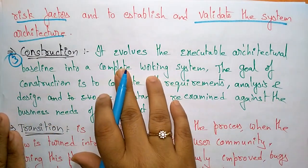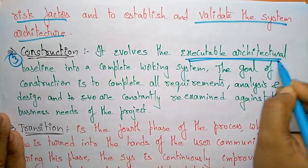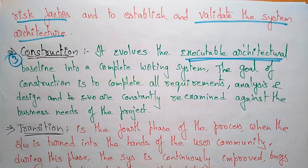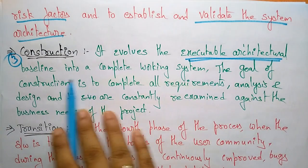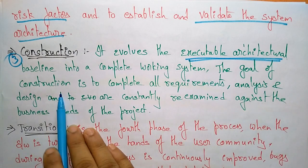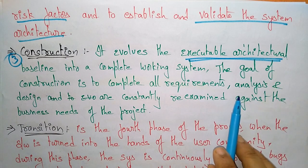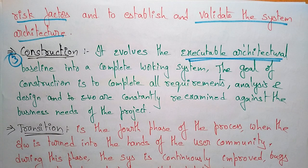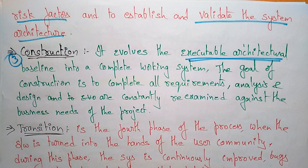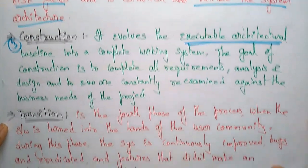The third phase is Construction. This phase evolves the executable architecture baseline into a complete working system. You think about what code and technology will be used to develop the product. The goal of Construction is to complete all requirements analysis and designs, which are constantly re-examined against the business needs of the project, while implementing and completing a working system.